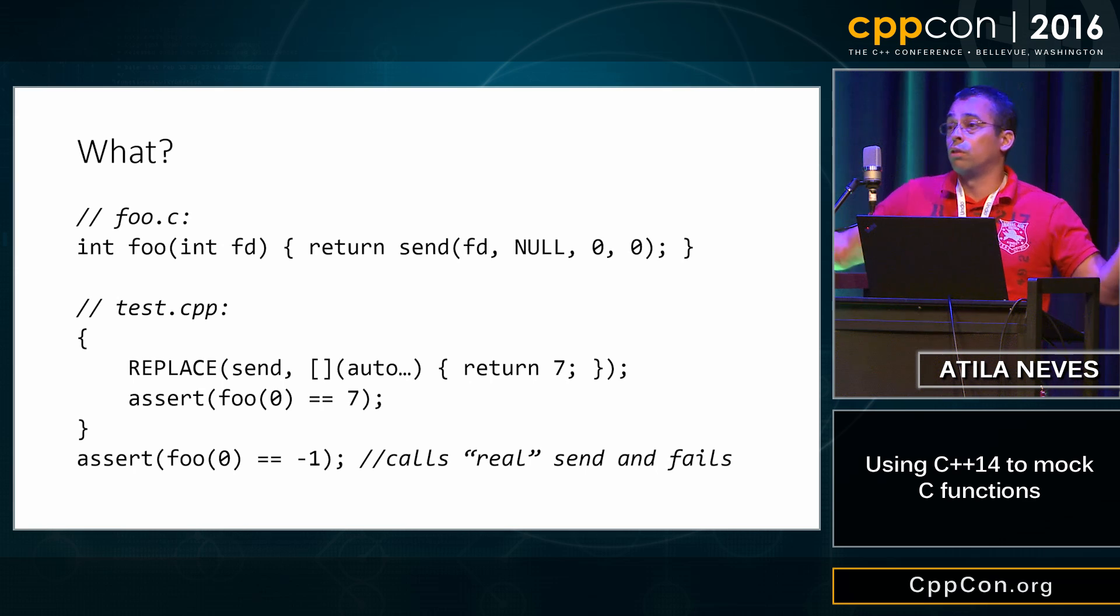Now this has good benefits because you don't stomp on any other unit tests that come afterwards that might not care if you send packets or actually do so, only replace the implementation until then. So if I replace send with the auto dot dot dot because I'm lazy, don't care what you're passing me in, return seven, I can assert that if I call foo with zero, I get back the number seven because all it's doing is returning the return value from send.